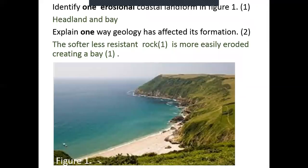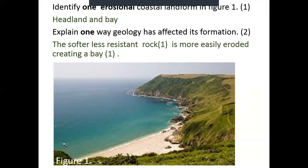Your answer: identify one erosional landform in figure one — that is the headland and bay, for one mark. Explain one way geology has affected its formation: the softer, less resistant rock is more easily eroded, creating a bay. One mark for saying softer rock is less resistant; a second mark for saying soft rock is easily eroded. That is everything — hopefully now you have a better idea of which landforms are erosional and which are depositional.